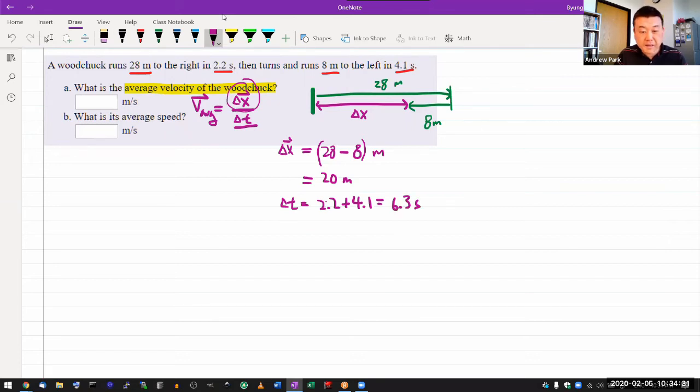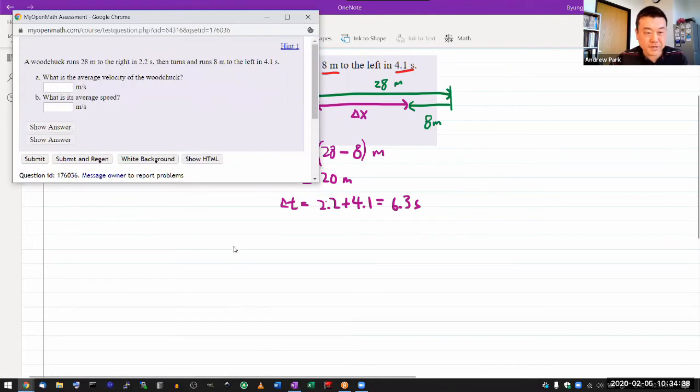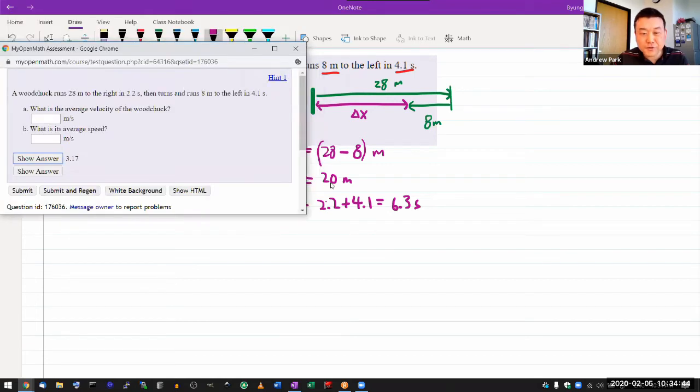And I can now put the numbers into calculator. Since I'm in that instructor view, let me just check my answer. When I do show answer, it's 3.17. And that kind of seems close enough to 20 divided by 6.3. 20 divided by 6 is about 3. So that seems right. So that's average velocity.